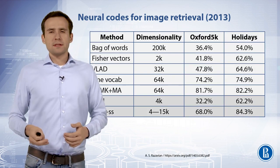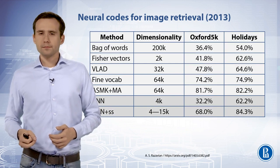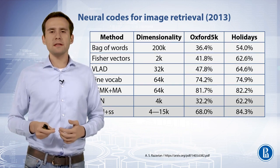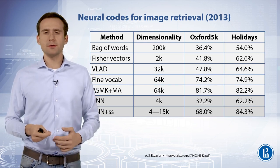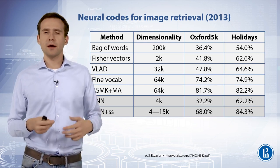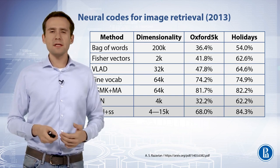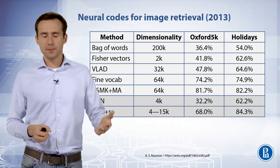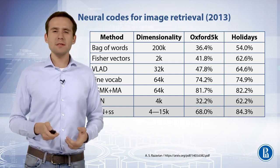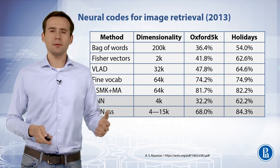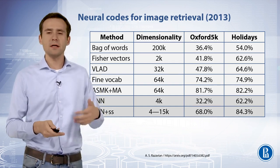All the methods except the convolutional neural network in this slide have their representation trained on datasets similar to those they report results on, while the CNN is trained on a different dataset. Yet the results depicted in the table are competitive, and CNN features compared to low-memory-footprint methods produce consistently higher results for retrieval.